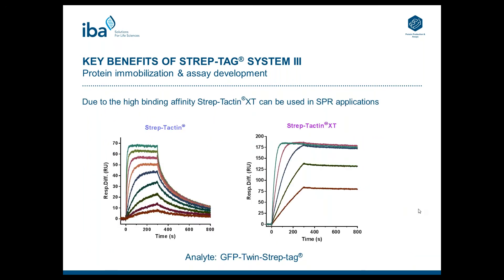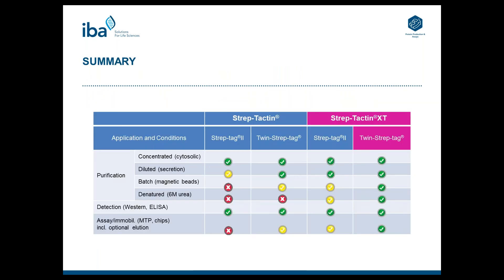The high binding affinity and stable binding of Twin Streptag to Streptactin XT can also be used for Biacore SPR measurements. In these sensorgrams, you see the immobilization of a Twin Streptag protein on either Streptactin or Streptactin XT. The K-on rate of Streptactin XT is much faster, and the stability of the interaction is much greater due to a lower K-off rate. Therefore, Streptactin XT is highly suitable for this kind of immobilization experiment.